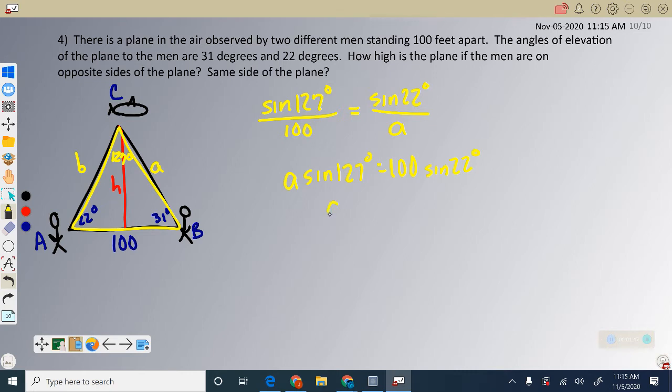When I divide both sides by sine of 127, I get 46.9. Now that I know this is 46.9, I can say, hey look,